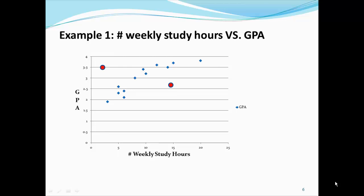Even though on average we would expect to see this behavior, we have to acknowledge that outliers exist. Everyone knows students that appear to study very little but still experience a high GPA. We also know students on the other end of the spectrum that study a great deal, but regardless of how hard they study, their GPA is still relatively low. When we study simple linear regression, we are trying to find the average behavior between the two variables. We say these two variables have a linear relationship because all data values appear to be grouped around some imaginary line.